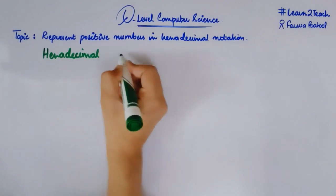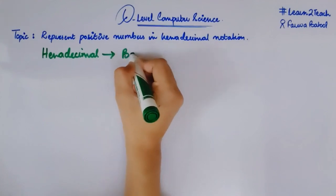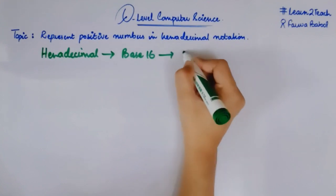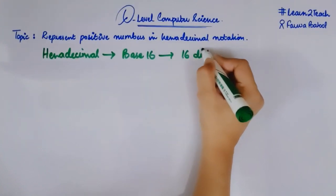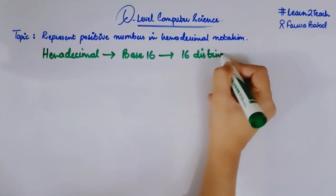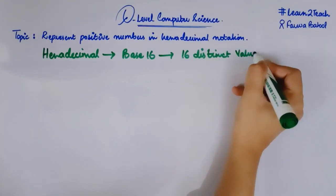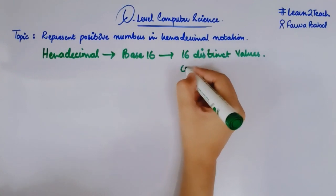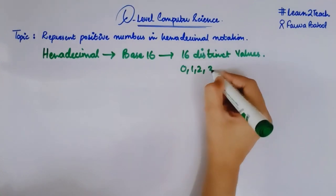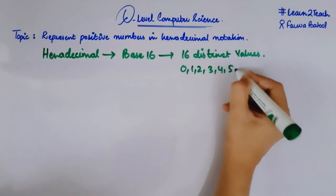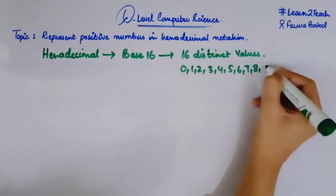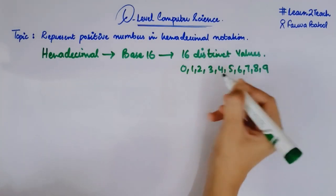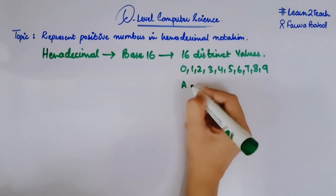Hexadecimal numbers are basically a base 16 number system, which means that here we are using 16 distinct values in order to represent any number. What are these values? These are from 0 to 9 — those are the 10 numeric values — and the other digits are alphabets from A to F.